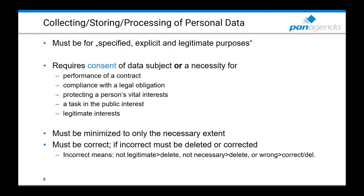To collect data from an EU citizen under GDPR requires consent of the data subject, unless it's necessary for the performance of a contract — for example, if you're selling a car and need their address and bank account number. Another exception is compliance with a legal obligation. Protecting a person's vital interests is another exception, most probably for police and government bodies. A task in the public interest — such as video surveillance in train stations or airports — is another exception.